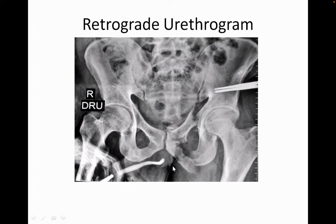What are the attachments of the urogenital diaphragm? How many layers does it have? The attachment, sir, is the ischiopubic rami.